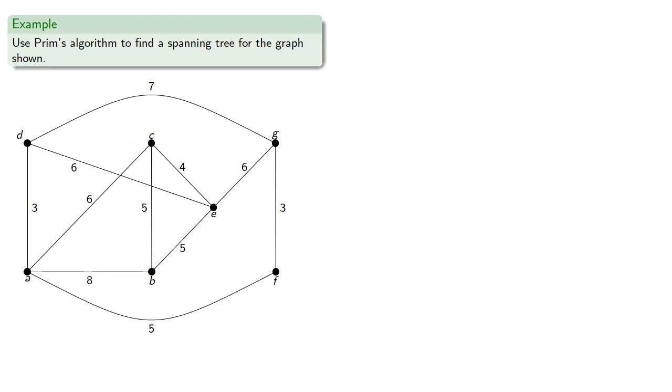So let's use Prim's algorithm to find a spanning tree. Let's start at vertex B. There are three edges we could add. We'll take the edge with the least weight, which is going to be BC.